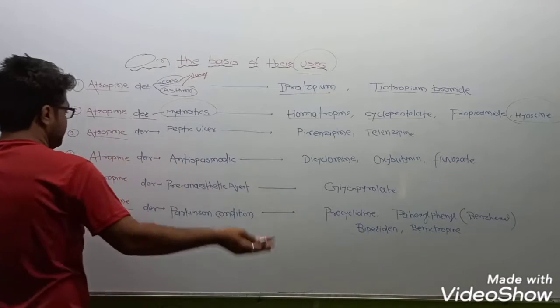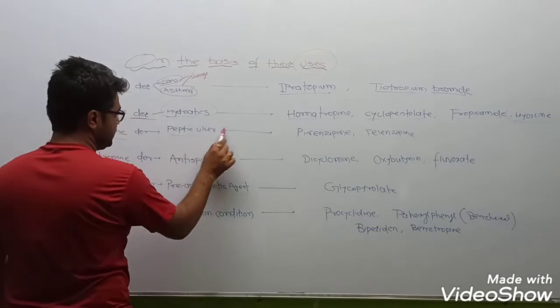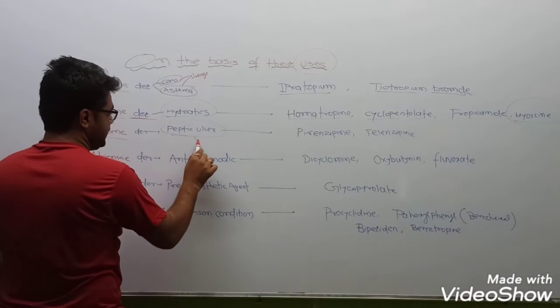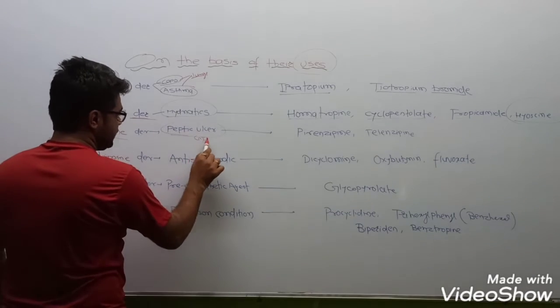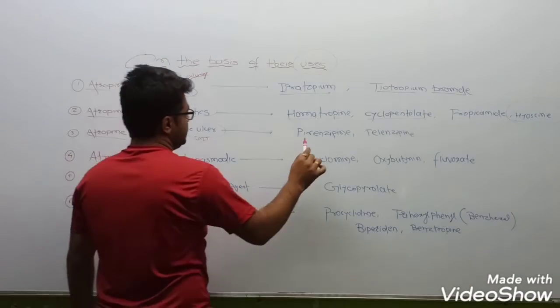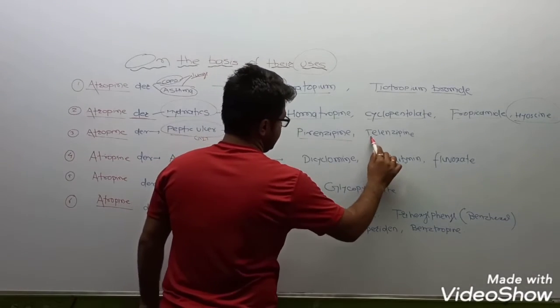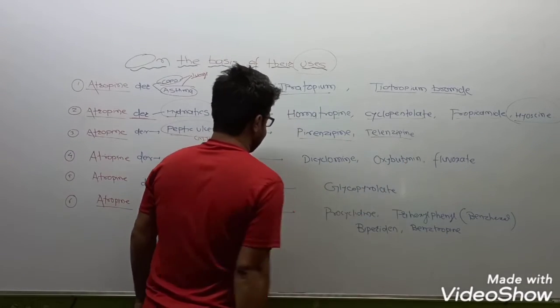Atropine derivatives which are used for peptic and GIT conditions: pirenzepine and telenzepine.